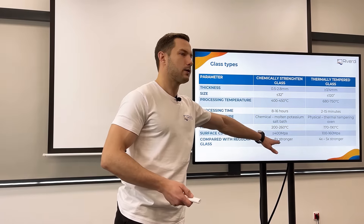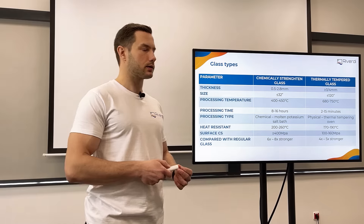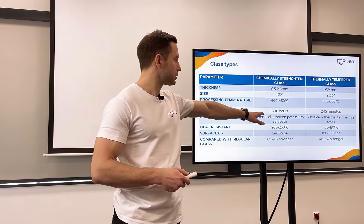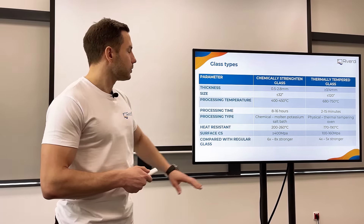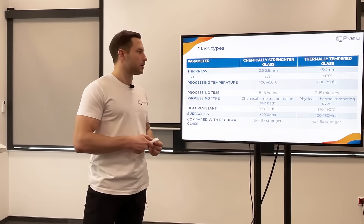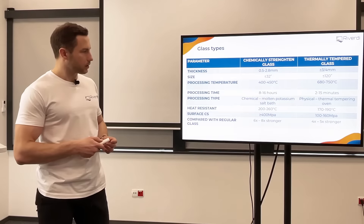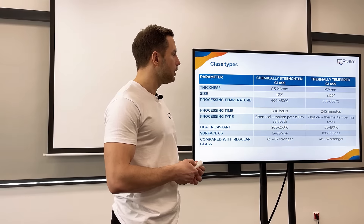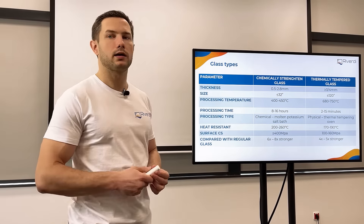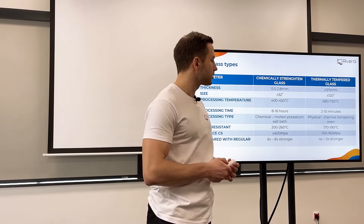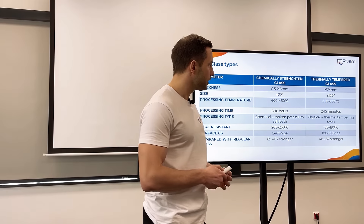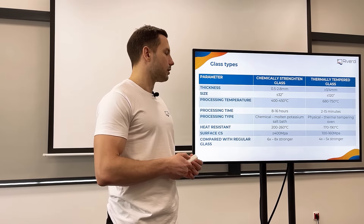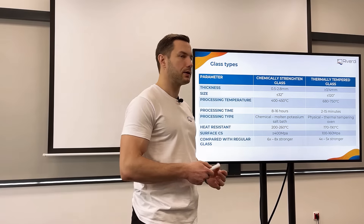As you can see in this table, we can make the glass even six to eight times mechanically stronger than regular glass with chemical strengthening. This is a pretty long process — it can take several hours and we need a high temperature of around 400 degrees. We can compare it to thermally tempered glass, which is a different way of strengthening. It uses high temperature and fast cooling — around 700 degrees — but this process is way faster, just several minutes. What we achieve is also strong glass, like four to five times stronger than regular float glass, but not as strong as chemically strengthened glass.